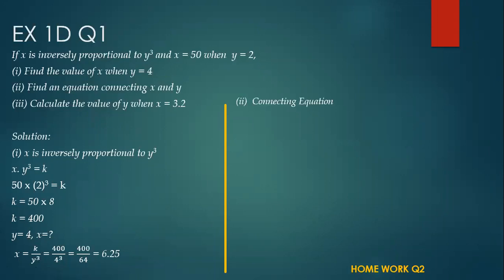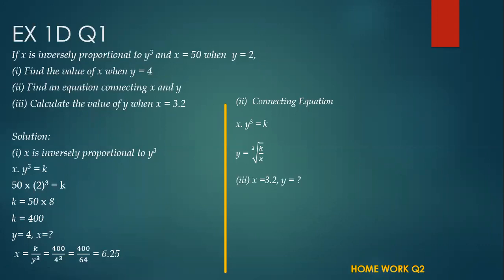Now make a connecting equation with respect to y, because that is what we have to find in the next part. So y will be the cube root of k upon x. You take x as the denominator on the other side, and to remove the cube, we take the cube root. Replace x with 3.2 — that means 400 upon 3.2 gives you 125. Since 5 times 5 times 5 is 125, the cube root of 125 is 5.